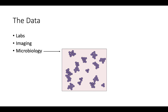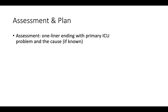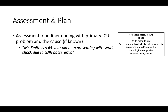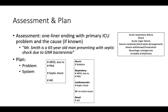During the subjective and objective portions of the bedside ICU presentation, there should be no editorializing of information if possible. After the objective, transition to the assessment and plan. The assessment is a brief one-liner that ends with the primary ICU problem and cause if known. Shown is the list of common ICU illnesses from the beginning of the session. An example one-liner: Mr. Smith is a 65-year-old man presenting with septic shock due to gram-negative rod bacteremia. A plan in the ICU can either be problem-based or system-based. In a problem-based plan, problems are discussed in their order of importance. In a systems-based plan, each organ system is mentioned along with any relevant issues. It is always best to check with attendings and fellows regarding which type of plan is preferred.